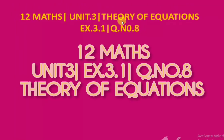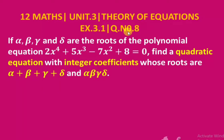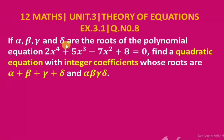12th standard, theory of equations, exercise 3.1, question number 8. If alpha, beta, gamma, and delta are the roots of the polynomial equation 2x⁴ + 5x³ - 7x² + 8 = 0, find a quadratic equation with integer coefficients whose roots are alpha + beta + gamma + delta and alpha × beta × gamma × delta.